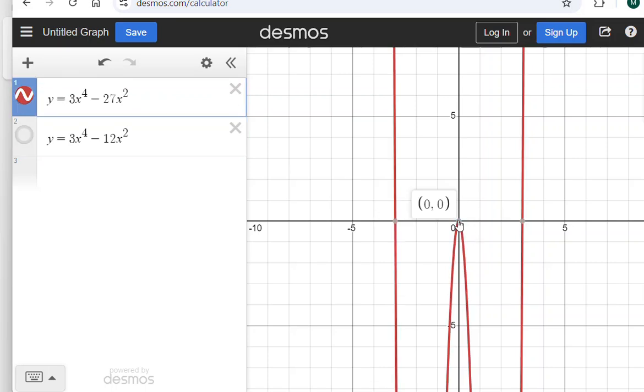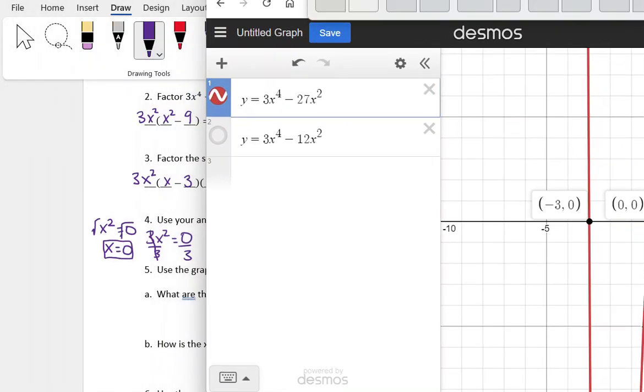So I can see that I have an x-intercept here at 0, 0, one at 3, 0, and one at negative 3, 0. So 3, negative 3, and 0, which is just what we found from solving.